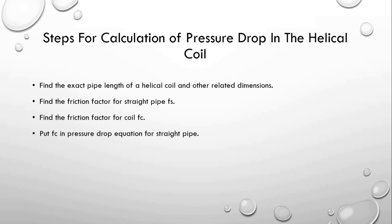In the second step, we find the friction factor for the straight pipe. I will not discuss the determination of the friction factor here; it is assumed that people know how to determine it for a straight pipe. Then, using various correlations given below, we find the friction factor for the helical coil. At the end, this friction factor is inserted into the equation used for straight pipe pressure drop calculation, and this equation then gives the pressure drop in the helical coil, because we are using the friction factor for the coil, not for the straight pipe.